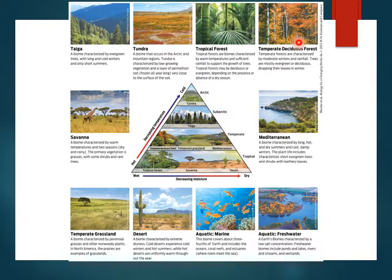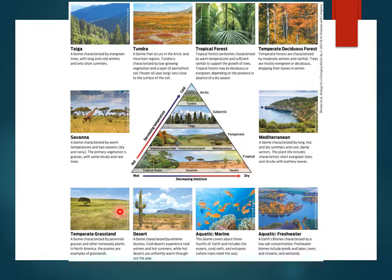In the temperate zone, we have temperate deciduous forests, characterized by moderate winters and rainfall, with mostly deciduous trees dropping their leaves in winter — that's where you get the fall colors, then a barren winter. We also have temperate grasslands with perennial grasses and other non-woody plants — the American prairies are a great example, and that's where the American bison live. Getting a little warmer, we go into the desert: extreme dryness, very little rainfall, with really cold winters but very hot summers.